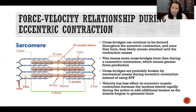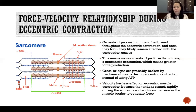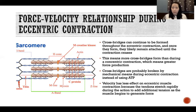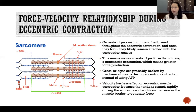Velocity has less effect on eccentric muscle contraction because the tendons stretch rapidly during the action to add additional tension as the muscle begins to generate force. The force-velocity relationship really applies to concentric contraction and not nearly as much to eccentric contraction. In the eccentric contraction, we're able to generate so much more force for all these reasons, and partly because the tendon is able to sort of take up the slack — the speed of the contraction is less critical because the tendon is elastic and takes up the slack as the muscle is lengthening. Thank you for watching.